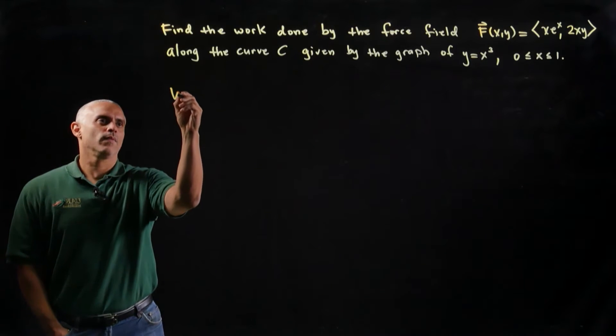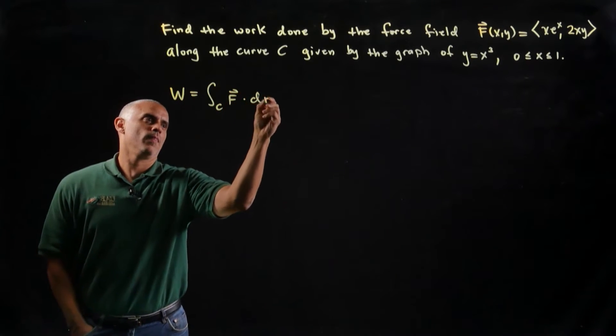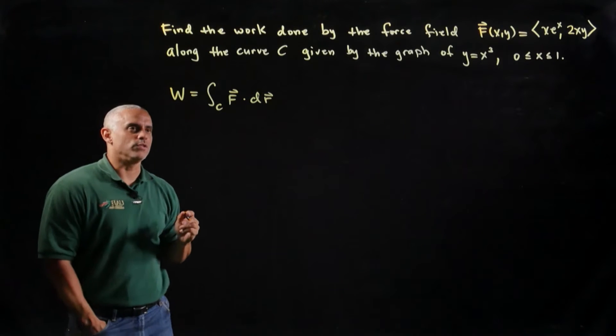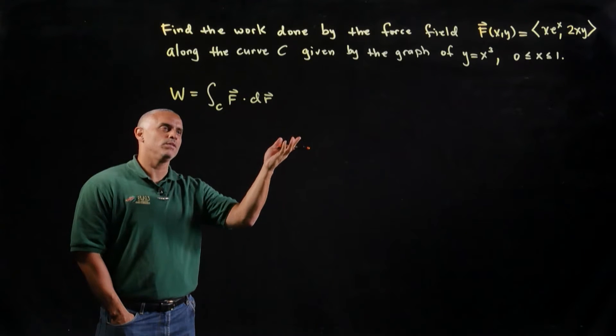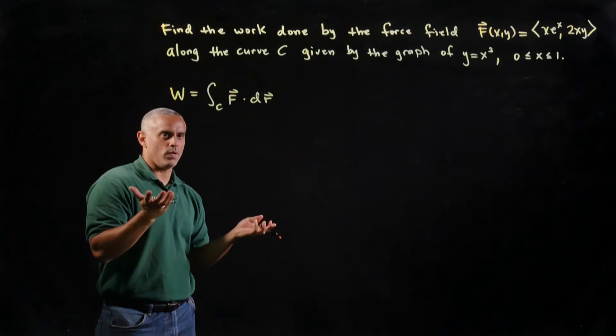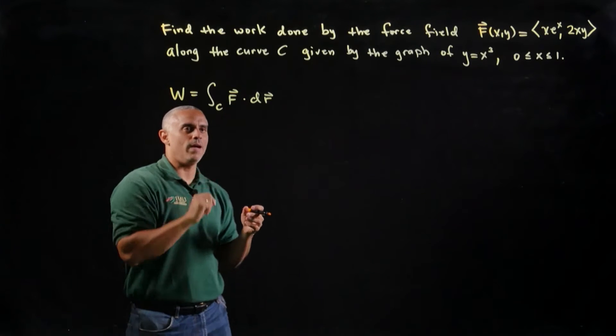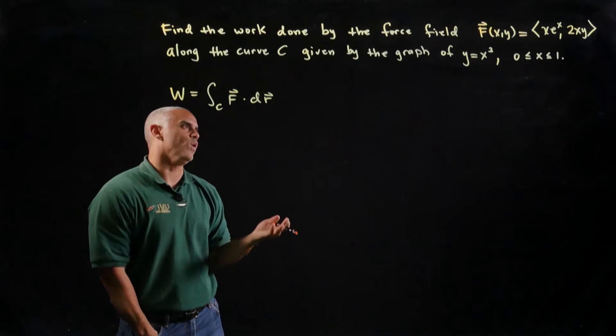So if we write our work formula, we recall that work is just the contour integral of F dot dr, and we're already given the force. So we still need to figure out how do I write the contour in a single parameter? How do I write my integrand, my force, and my differential dr all in one parameter?